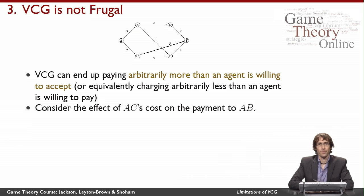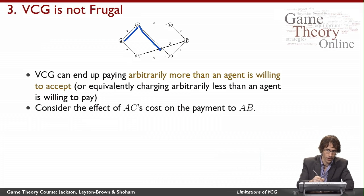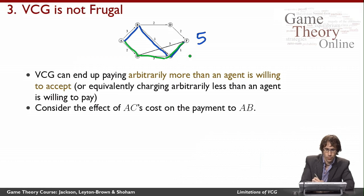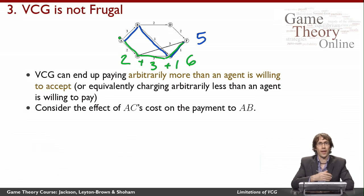The next problem with VCG has to do with the payments. We say that VCG is not frugal because the payments can really seem out of line. Let's think about the graph routing example, where we want to find the shortest path and pay agents for routing traffic along their edges. The shortest path has a cost of 5, and the second shortest path has a cost of 6 (2 plus 3 plus 1). Now let's think about the effect on agent AB of changes to AC's cost. VCG can end up paying arbitrarily more than AB is willing to accept, because AB's payment doesn't depend on his own declaration but instead depends on the cost of the next shortest path.